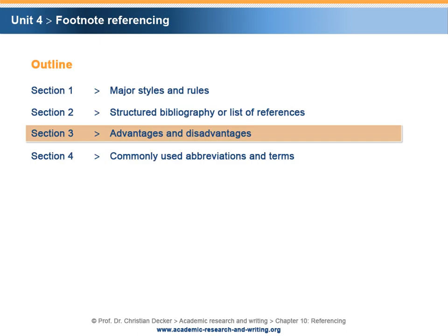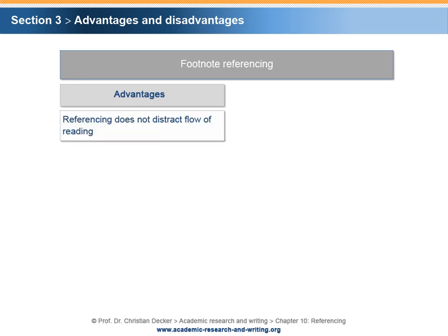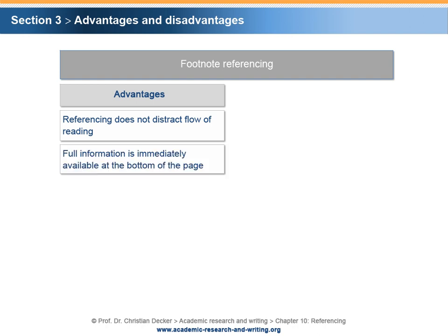Section 3 – Advantages and Disadvantages. One of the main advantages of footnote referencing is that it does not distract the flow of reading. Furthermore, especially with full information footnotes, the whole information about the source is immediately available at the bottom of the page. Additionally, it is informative for readers who are not familiar with cited sources.